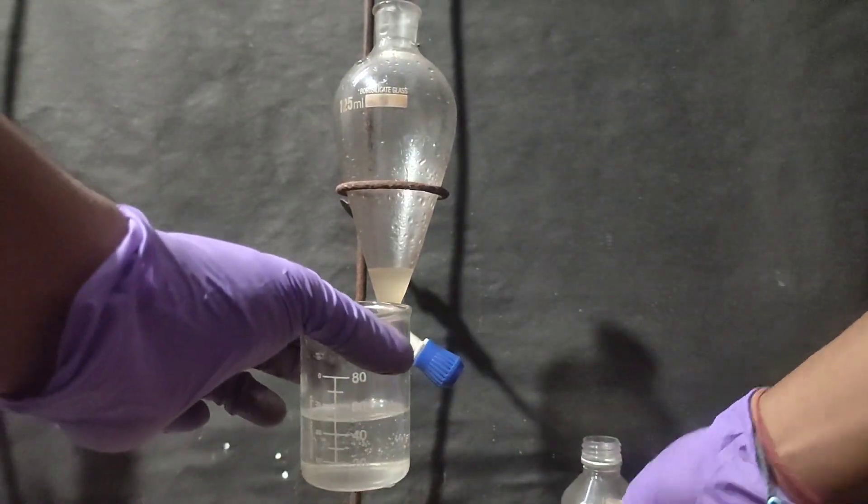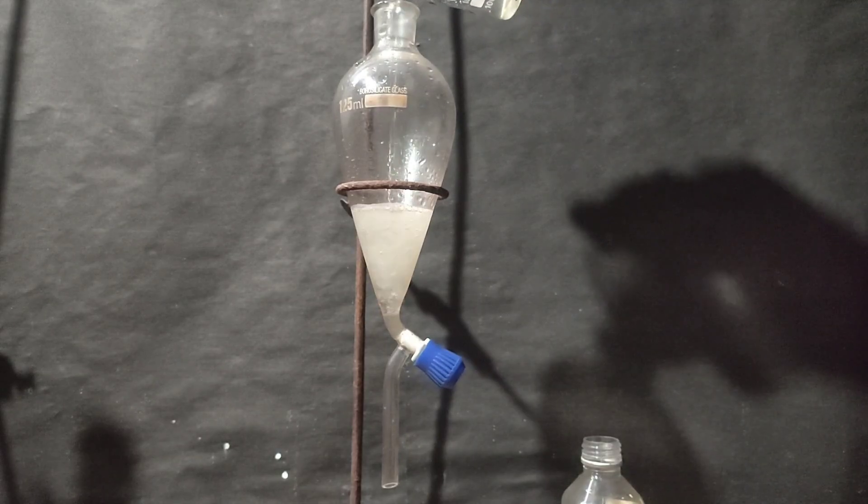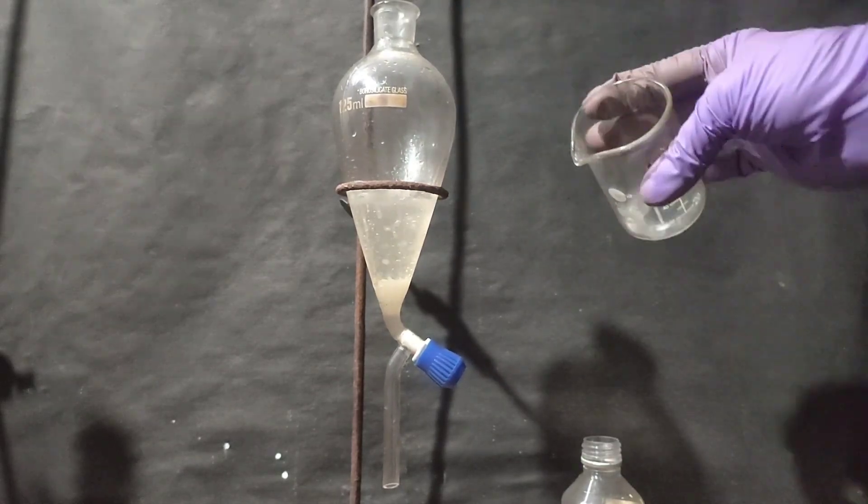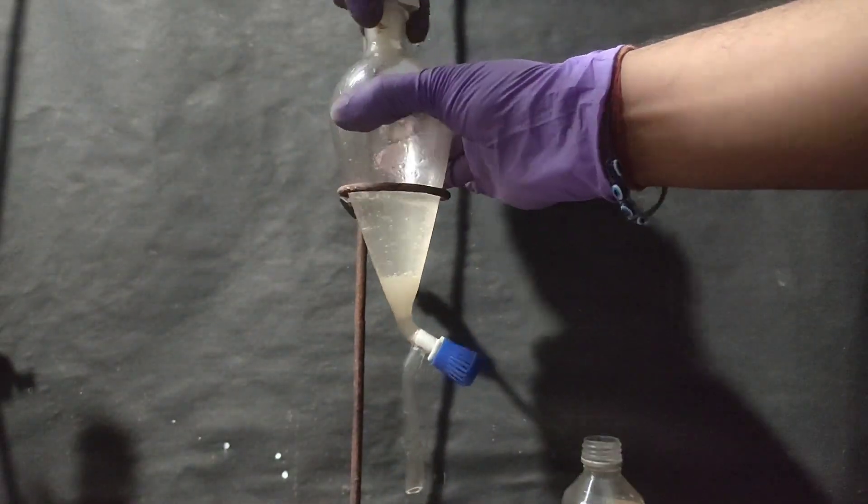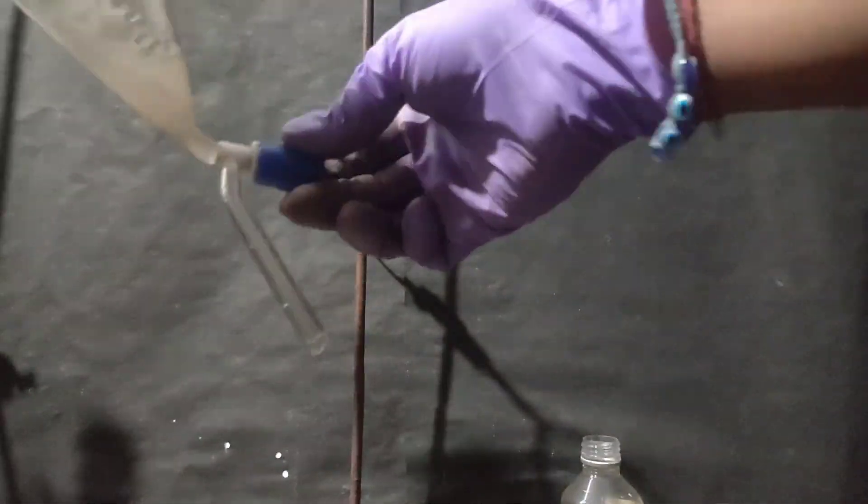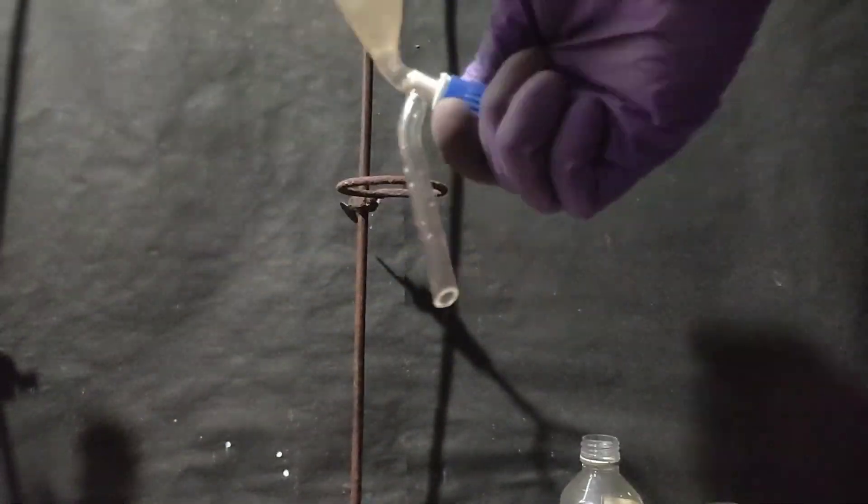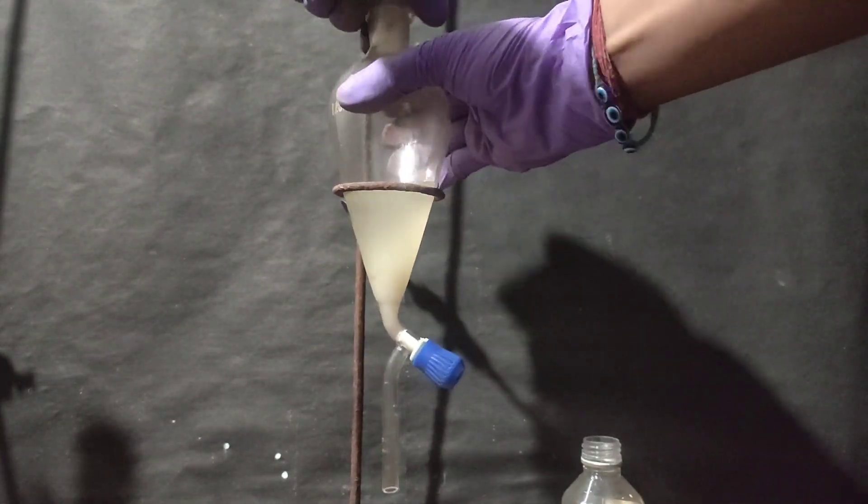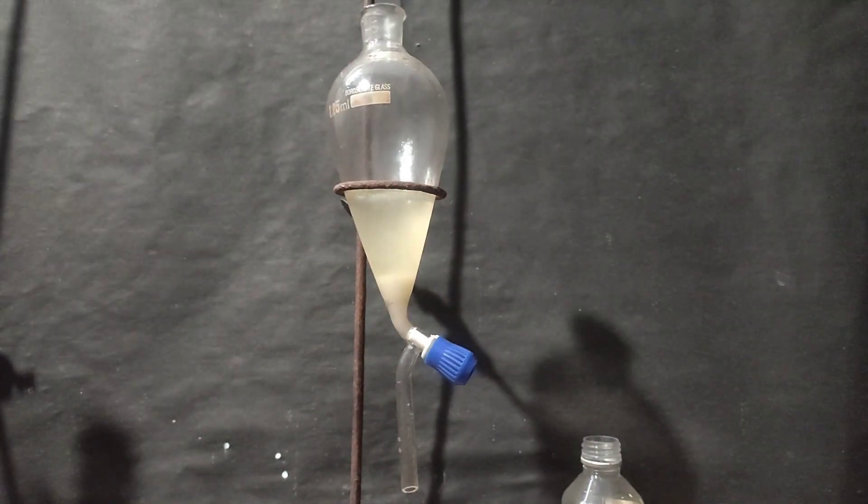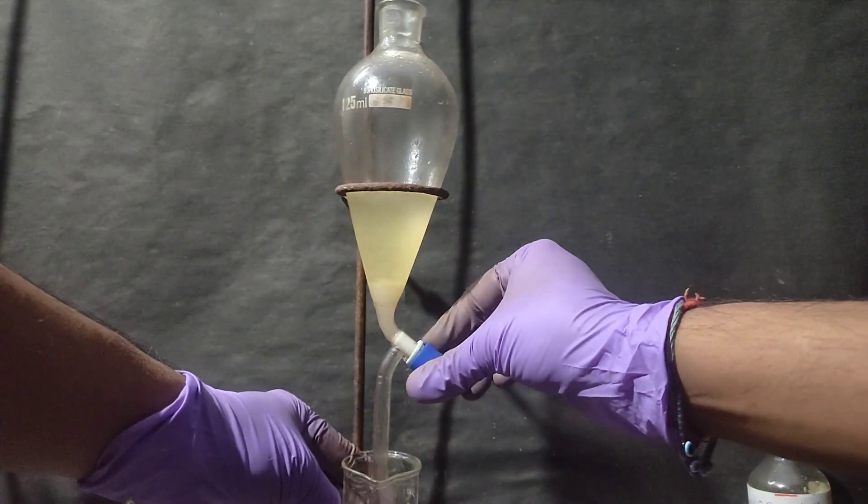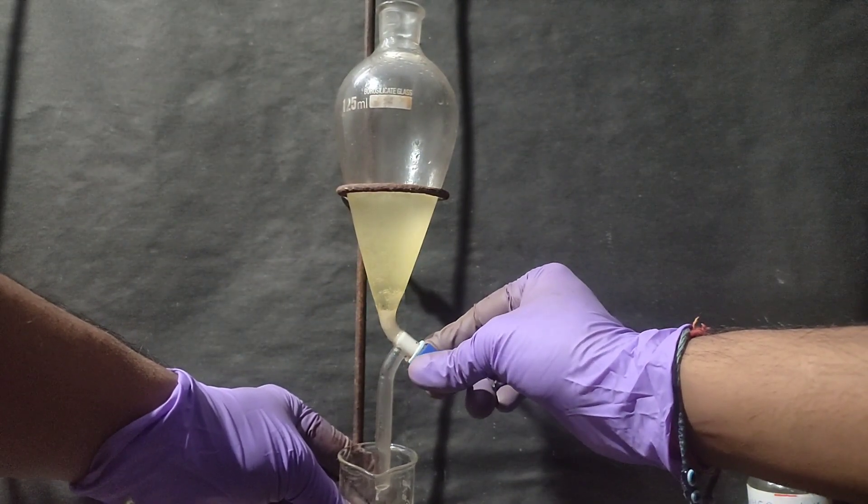I added the lower DCM and TNG layer back into the separatory funnel. Now to it, I am adding some 5% sodium bicarbonate solution. Then I kept shaking and venting a few times and let it settle. Then I drained the lower layer into the beaker. Then I also poured the sodium bicarbonate solution in another beaker.